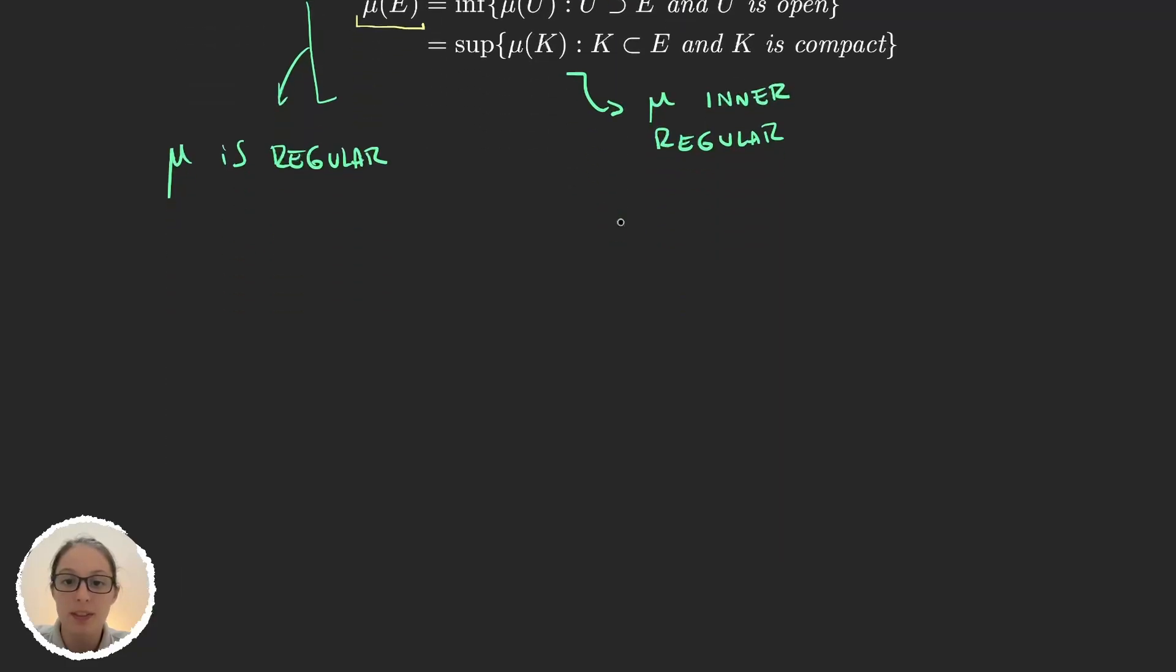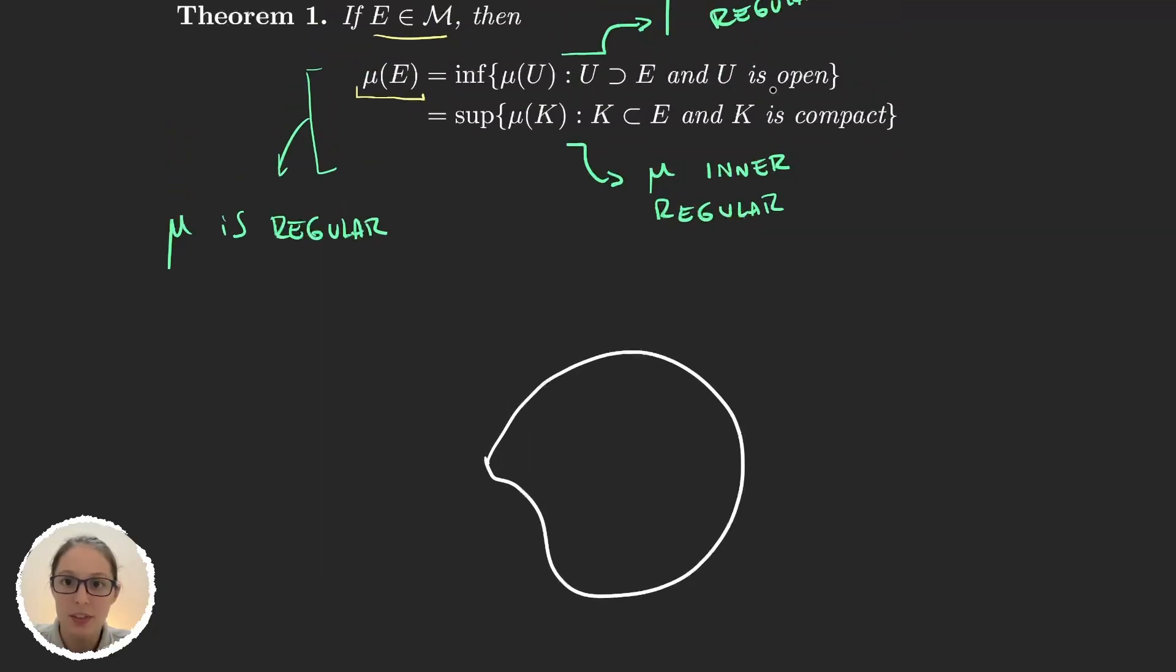So basically what this is telling us is we have a set E that we want to calculate its measure. Well, what happens if for some reason we cannot calculate it? Let's say the set E is very complicated, but we know that our measure is regular. Well, if it's outer regular, then you can just approximate the measure of this set with, like it says here, open sets that are supersets of E.